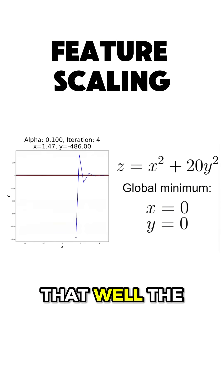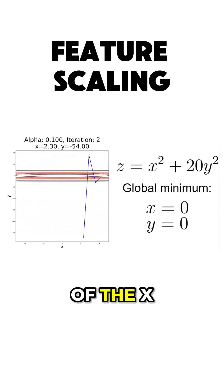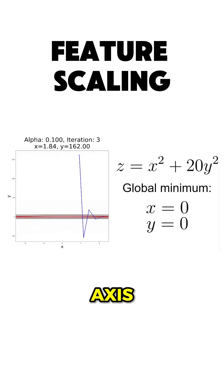So why is that? Well, the answer is simple. The learning rate alpha is tuned for the scale of the x-axis, but not for the scale of the y-axis.